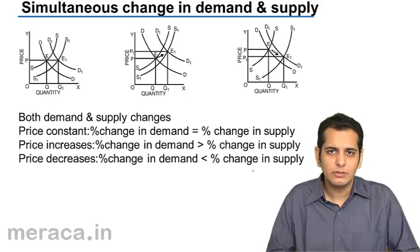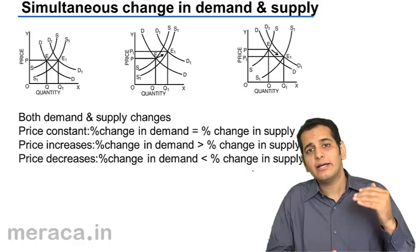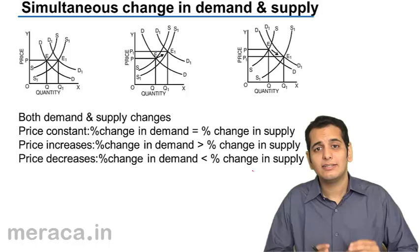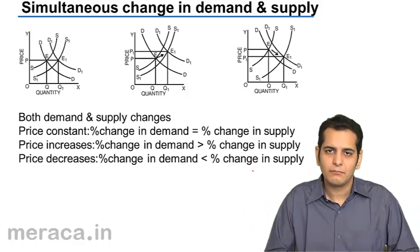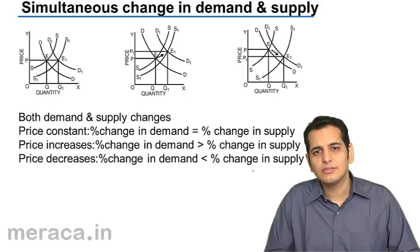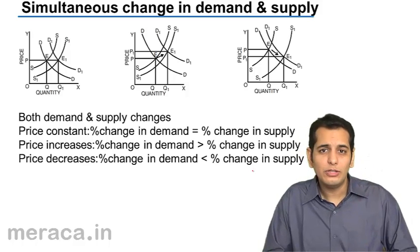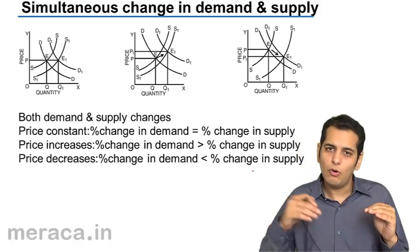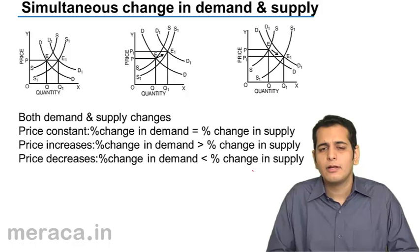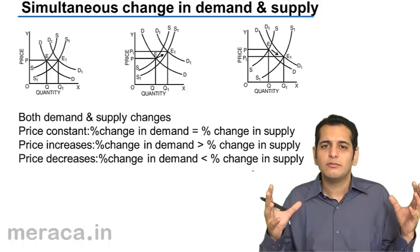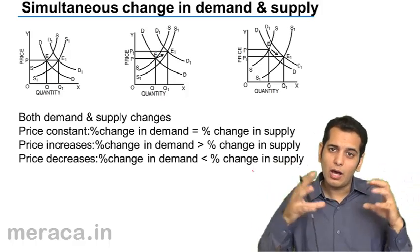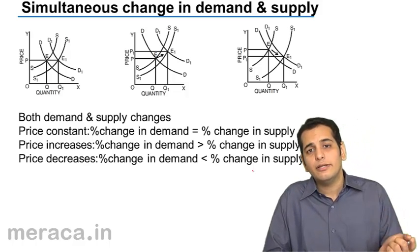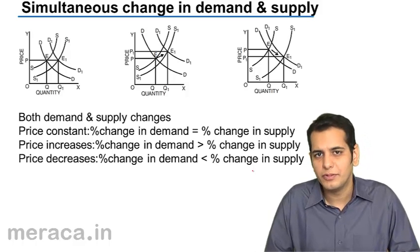Let us understand what happens when the demand and supply simultaneously change. Simultaneously change means they change at the same time. In all the earlier cases, we have considered change in only one of the two factors — either only the demand was changing or only the supply was changing. Now, we'll see cases where both are simultaneously changing and study the effect of such change on the equilibrium price.